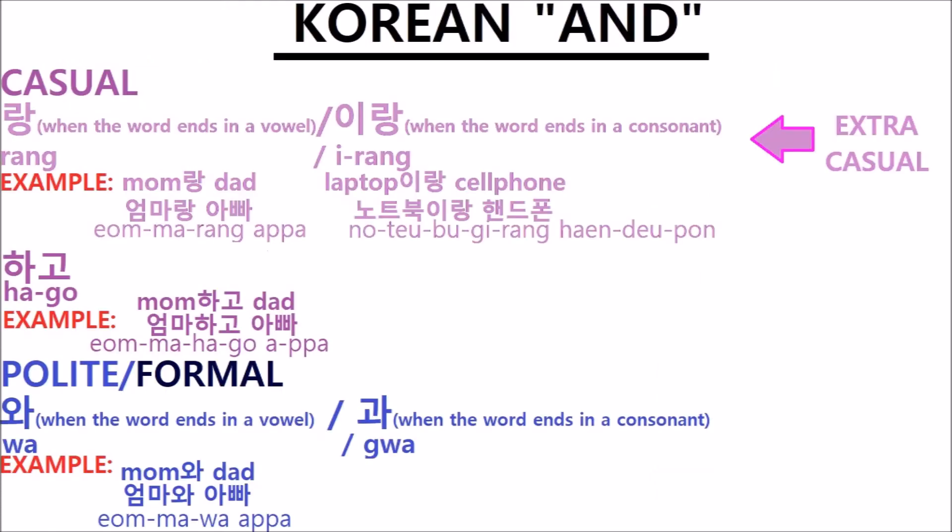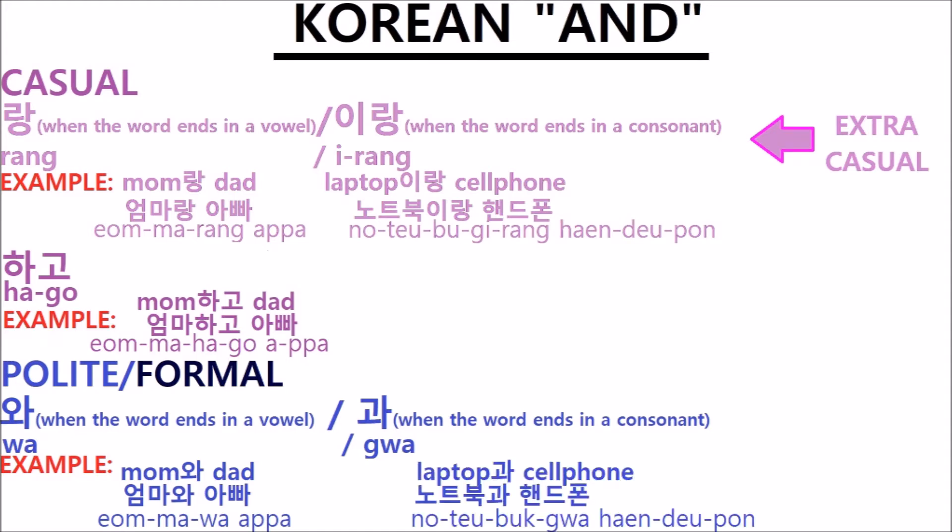Our example, 'mom and dad,' with the formal/polite version of 'and,' looks like this: 엄마 와 아빠 (eomma wa appa). 'Laptop and cell phone': 노트북 과 핸드폰 (noteubuk gwa haendeupon).